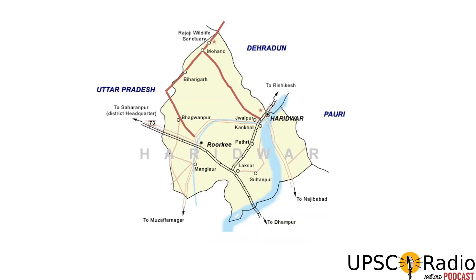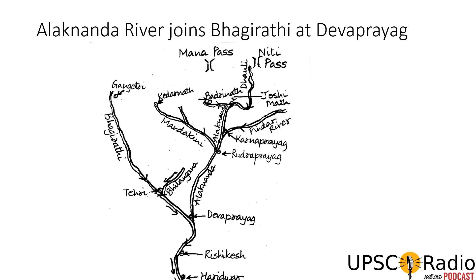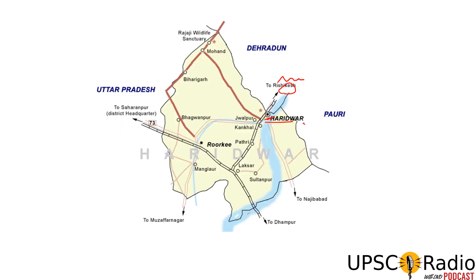So here, the Ganga River — as we all know — passes through Haridwar. Rishikesh is situated in the Himalayas and Haridwar is at the foothills of the Himalayas. Haridwar is part of the Himalayas region. These two places are well known. From Haridwar the river is known to everyone. At the upper level, the Alakananda River joins the Bhagirathi at Devaprayag. Let's look at the picture.